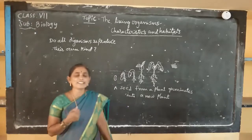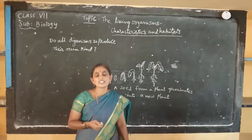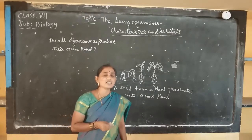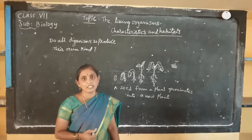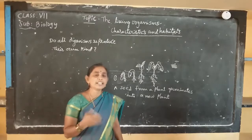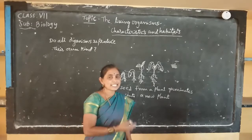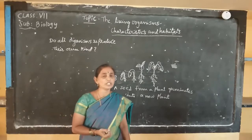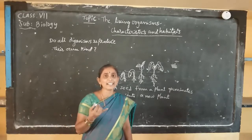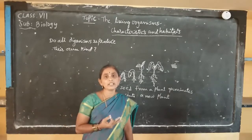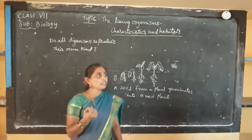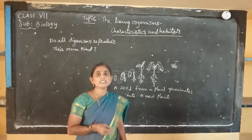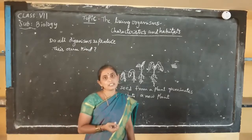Good morning students, welcome to biology online class. In last session we have started developing the living organisms, characteristics and habitats. We have already discussed different types of habitats like terrestrial habitat and aquatic habitat. Terrestrial habitat also has different types: grassland, forest, mountain, coastal and desert. Aquatic habitat includes marine habitat and fresh water habitat. We have discussed all that.